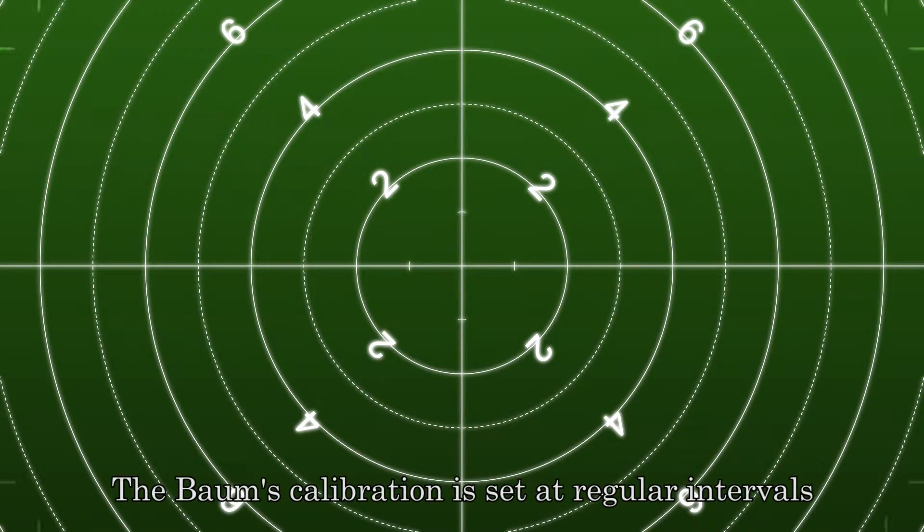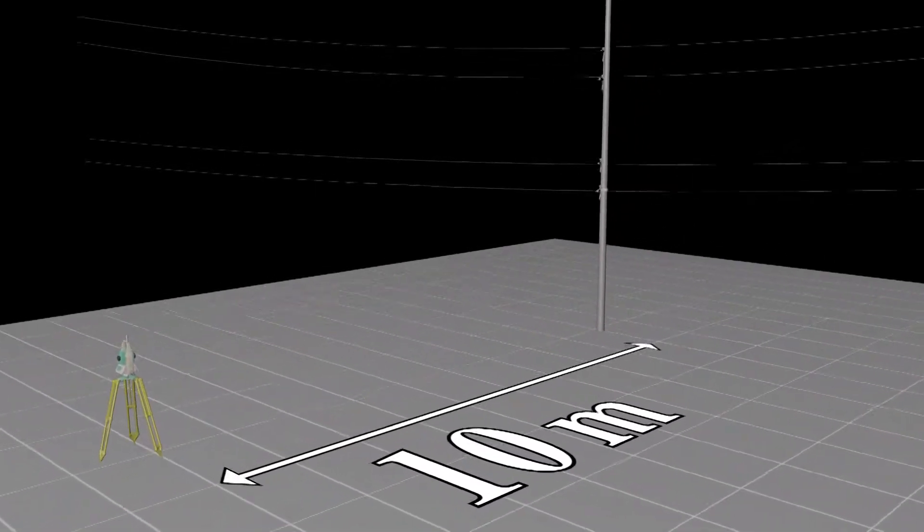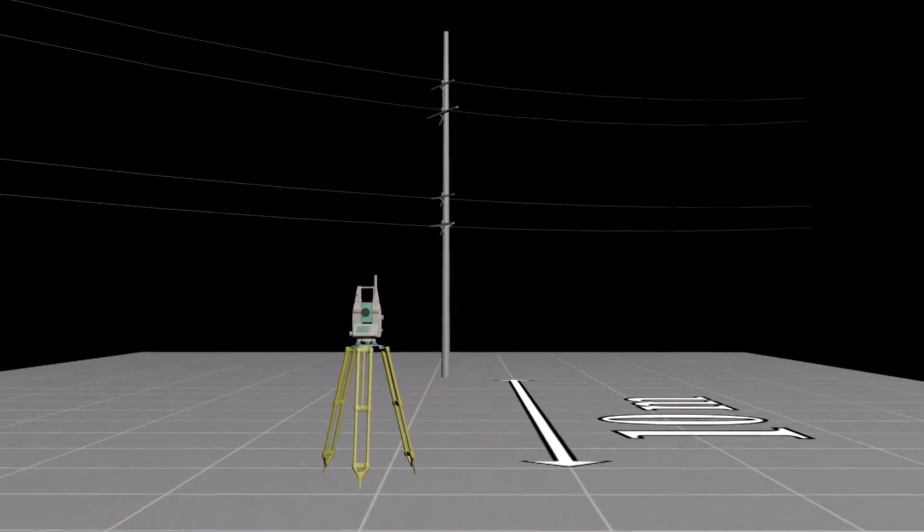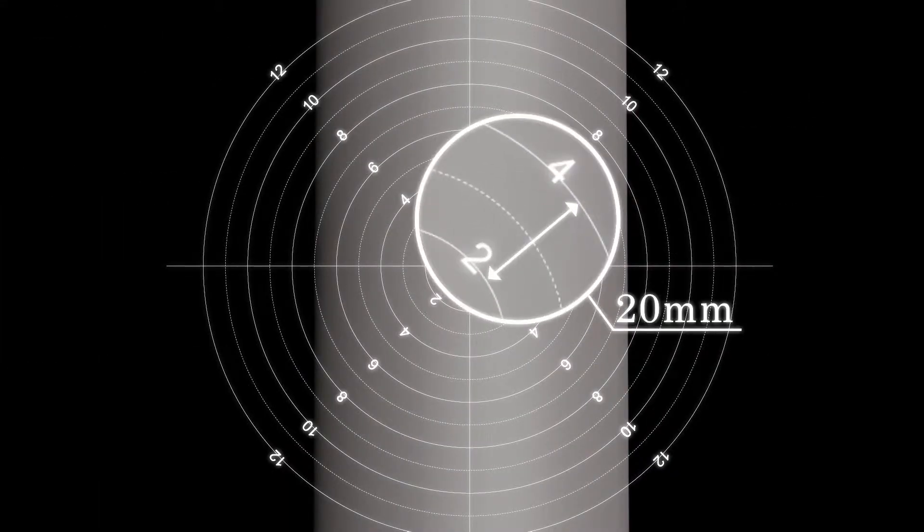The Baum's calibration is set at regular inches. For example, at Calibration 1, an object 10 meters away is marked as 10 millimeters. At Calibration 2, the same object would be marked as 20 millimeters.